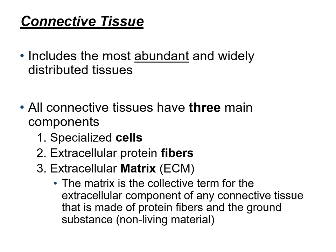Connective tissue is the most abundant type of tissue in the human body and it has the widest distribution. It is made up of cells, the extracellular matrix, and there are extracellular protein fibers in the ECM.